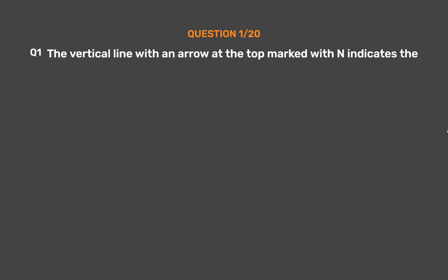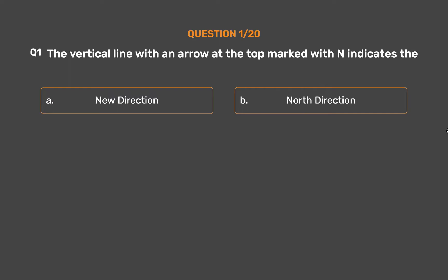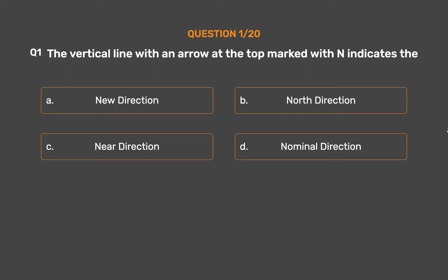Question number 1. The vertical line with an arrow at the top marked with N indicates the — Option A: New direction. Option B: North direction. Option C: Near direction. Option D: Nominal direction.